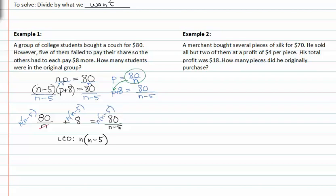Dividing out the common factors gives me eighty times n minus five, plus eight times n times n minus five, equals eighty n. Now I'll distribute to clear my parentheses. 80n minus 400 plus 8n squared minus 40n is equal to 80n.